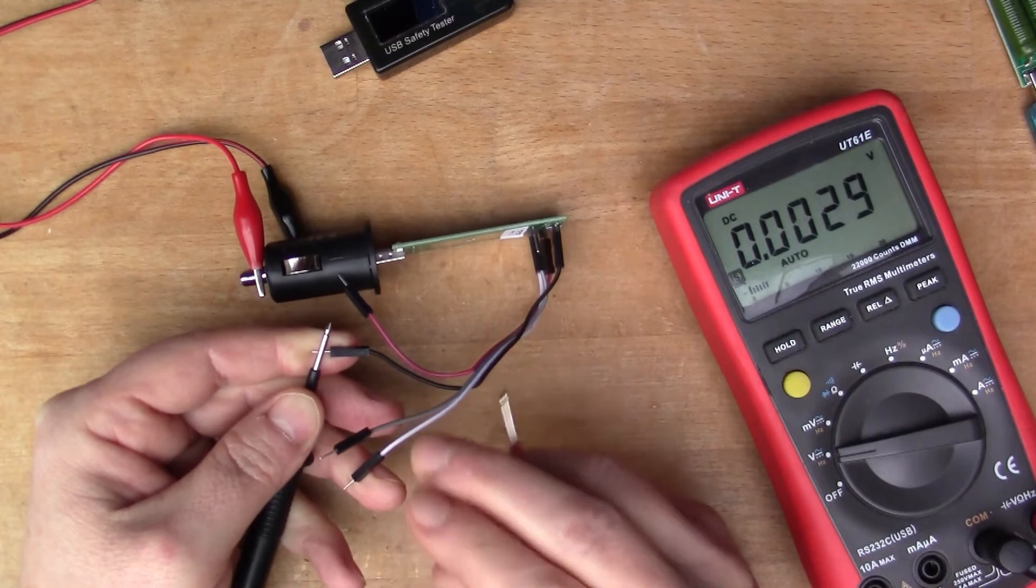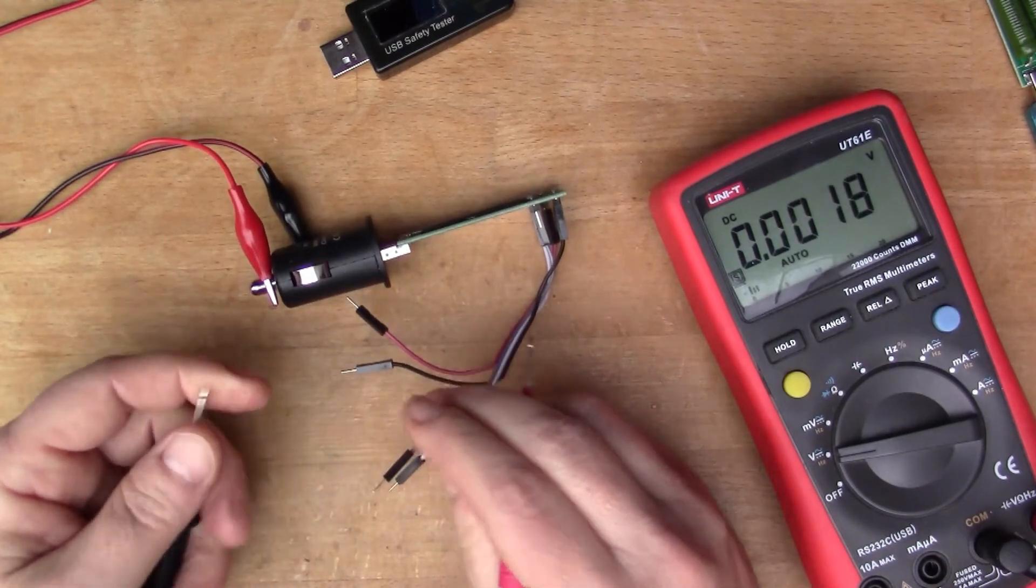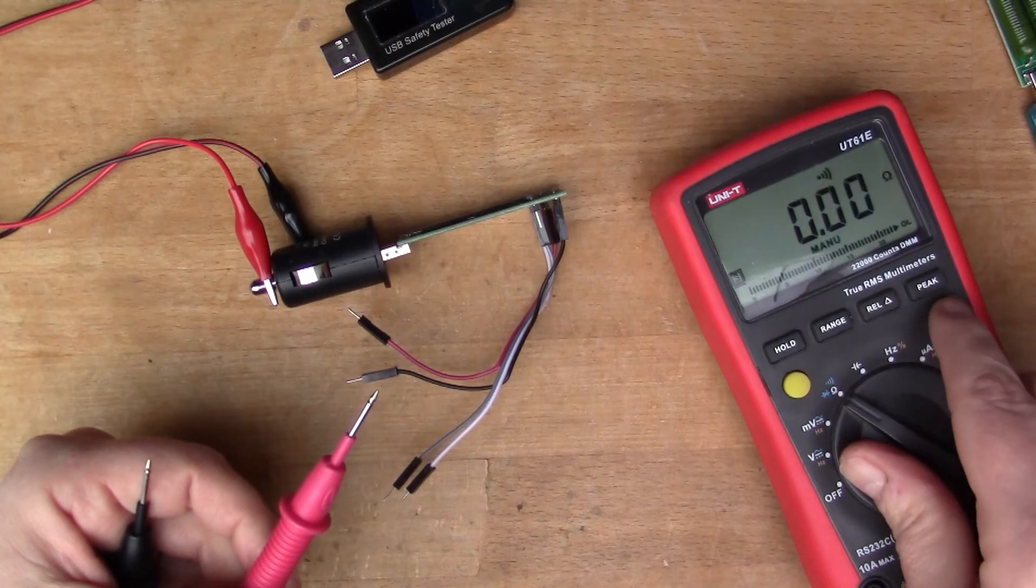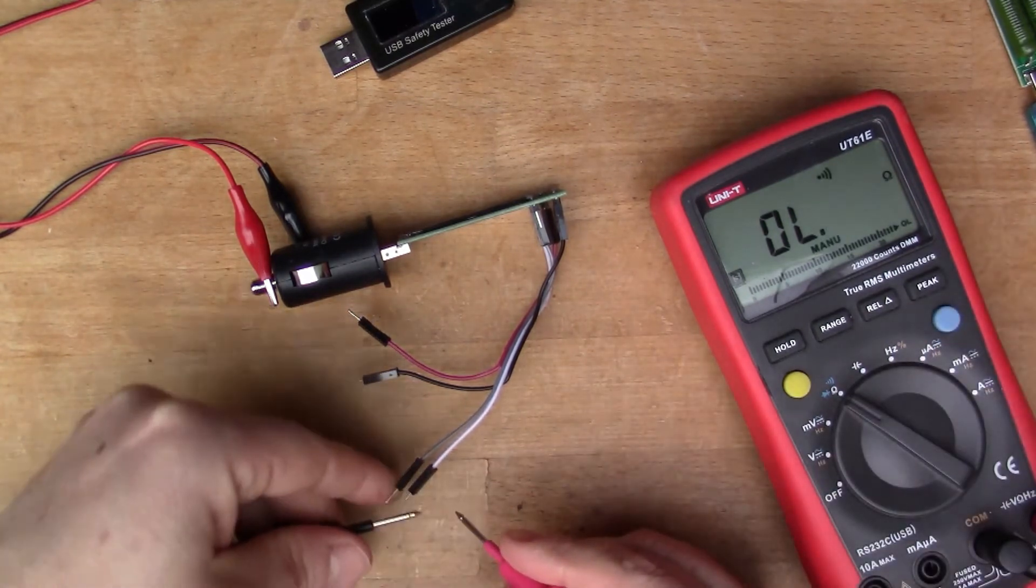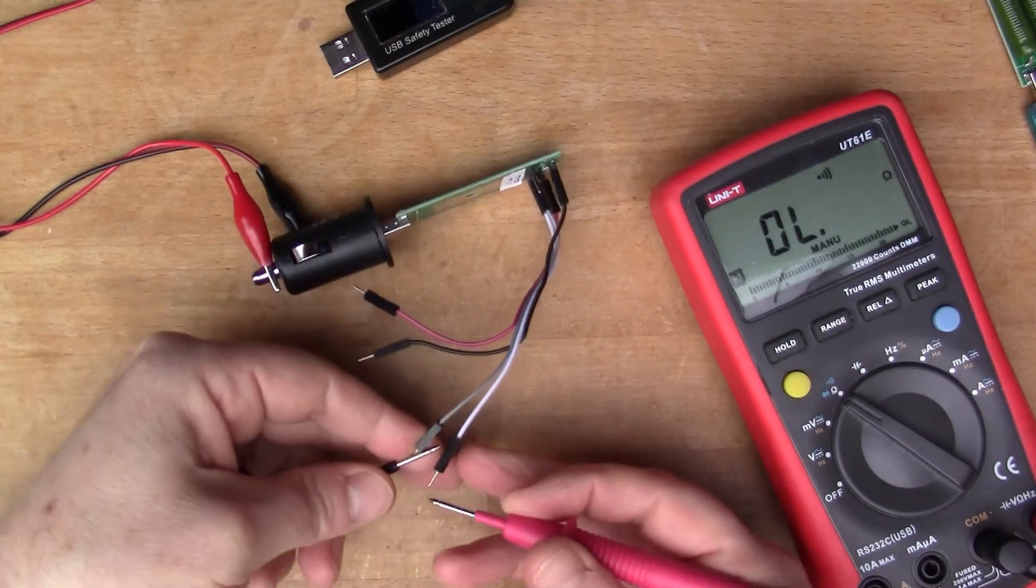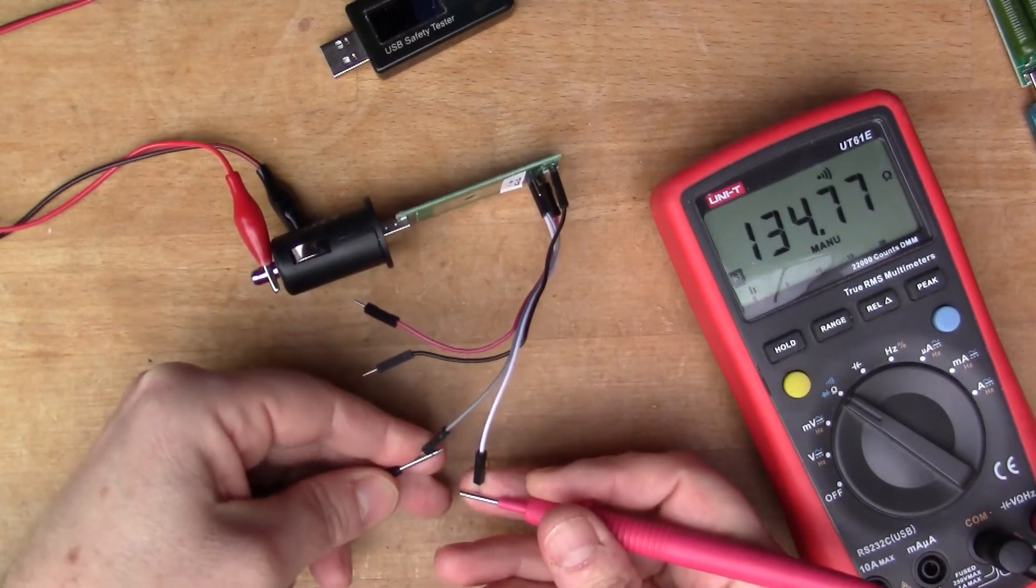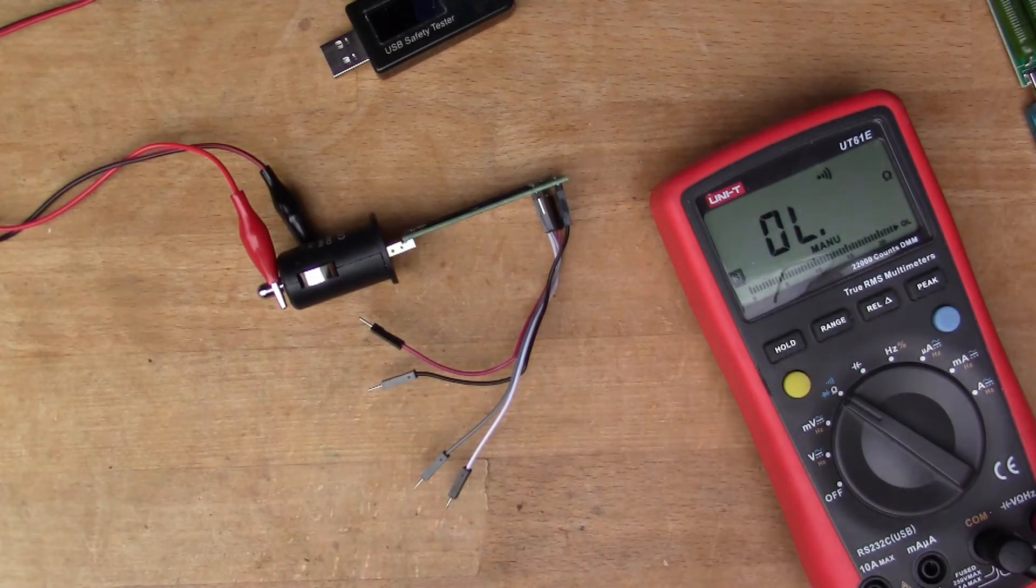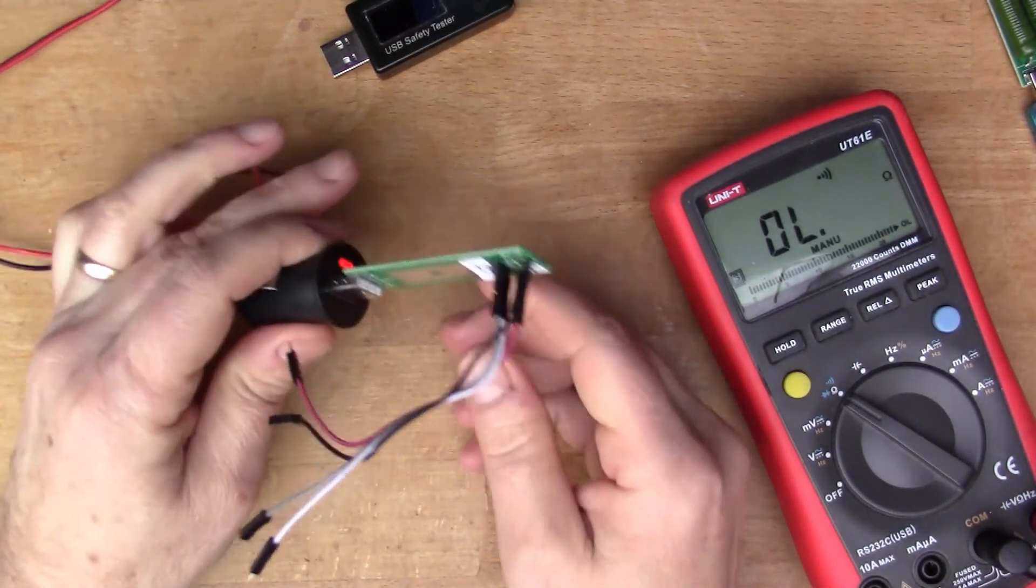So I think these wires might actually be floating. Let's check that. Let's put it on continuity. Yeah, so the D plus and the D minus are actually interconnected in the Chinese style.